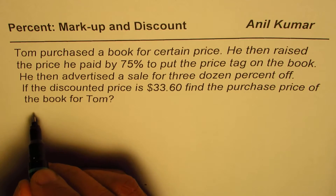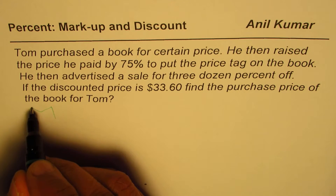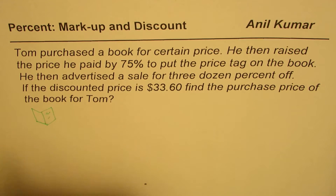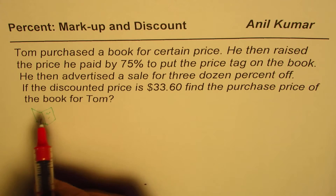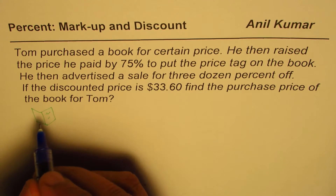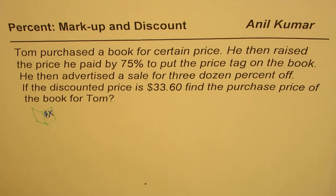It says Tom purchased a book. So let's say this is the book which is being purchased by Tom. The question is: find the purchase price of the book. We don't know the price, so let's say the purchase price for the book is $X. That is the purchase price.